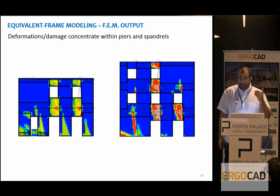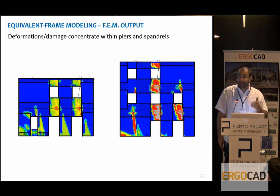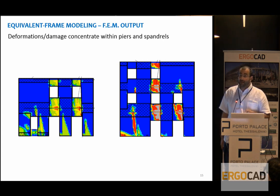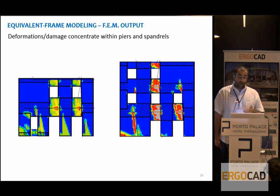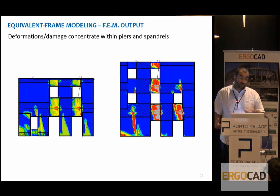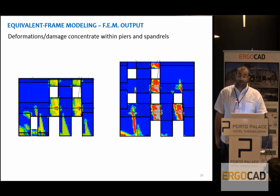If we don't trust these observations, we could also carry out more refined analyses, for example finite element analysis on plane walls. Again, we would see that in most cases deformation concentrates within spandrels and piers, while nodes — the connections between these elements — are usually less affected by strains and deformations in general.